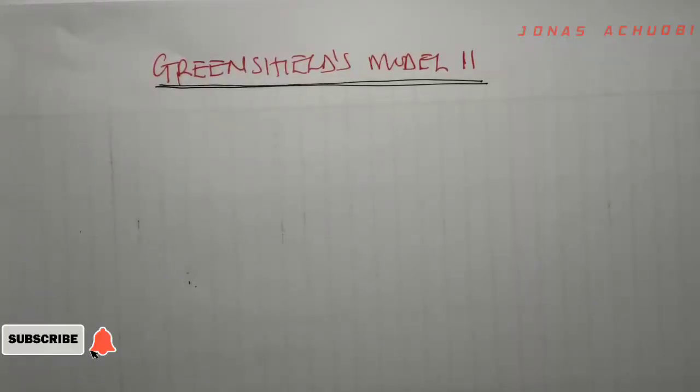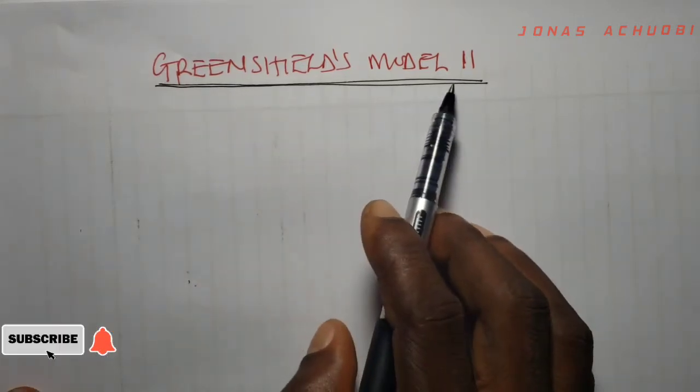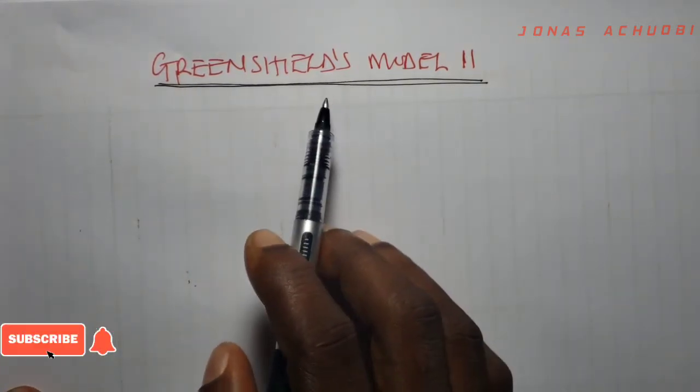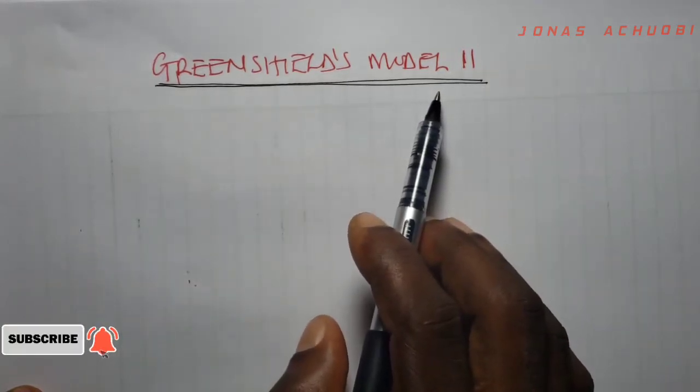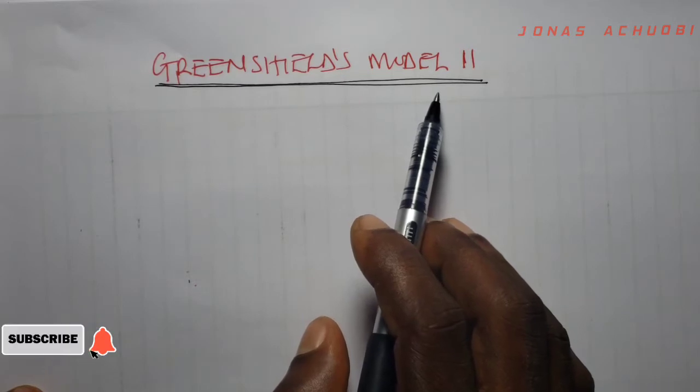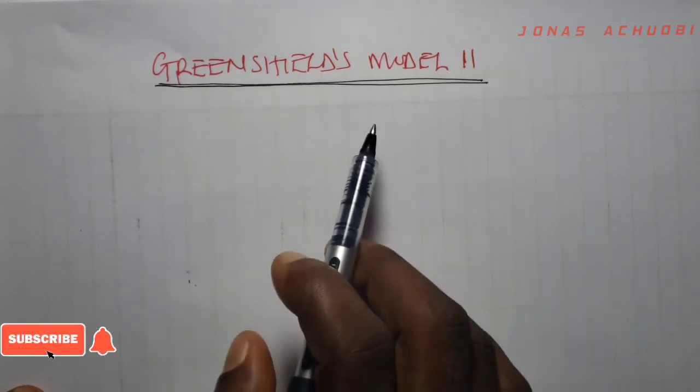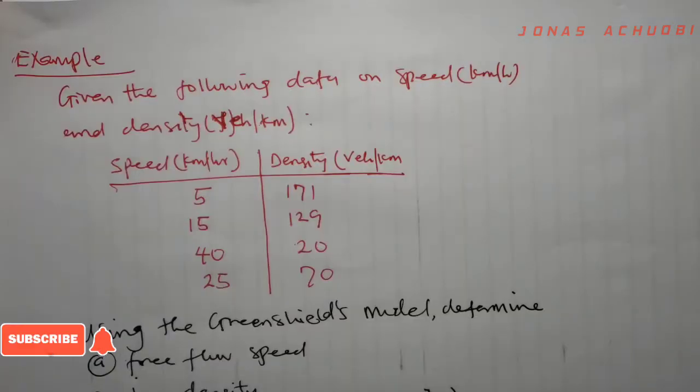Hello and welcome to today's video where we shall be discussing Green Shields Model 2. In our last video we discussed in detail the Green Shields Model where we developed relationships between speed and density as well as flow and density. In today's video we shall be solving an example to demonstrate the Green Shields Model.